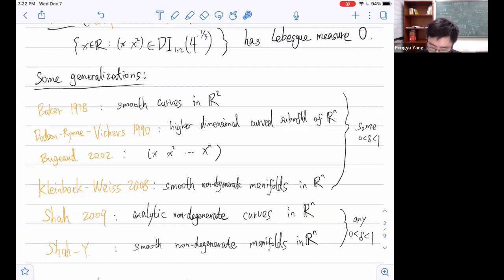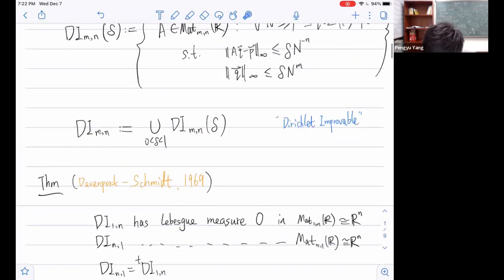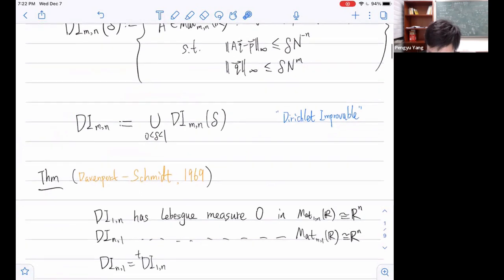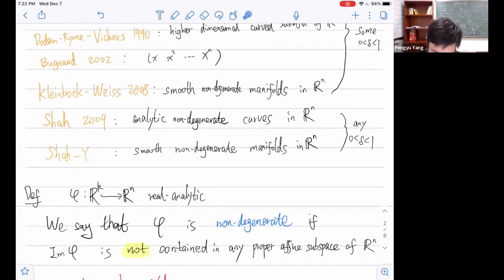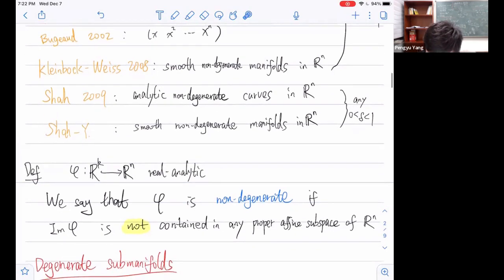All these are for some delta between zero and one, depending on this curve or submanifold. It is more difficult to prove this for any delta between zero and one, meaning to show that the set of Dirichlet improvable vectors on this curve or submanifold has measure zero because it is the union of all delta improvable. This is larger than any DI_delta.